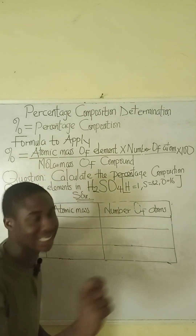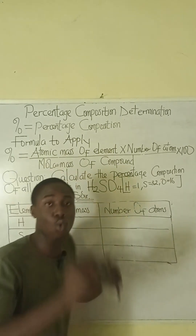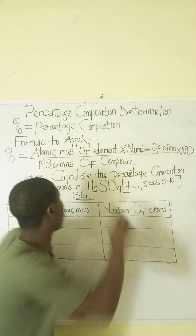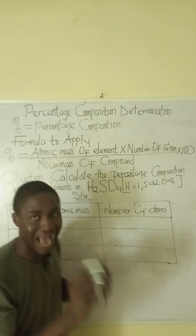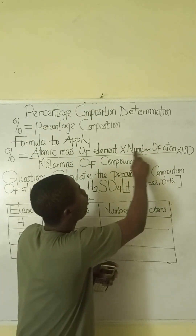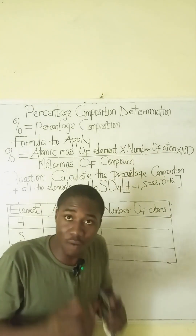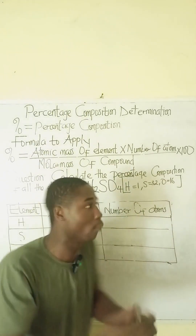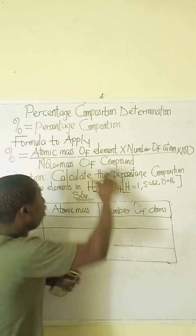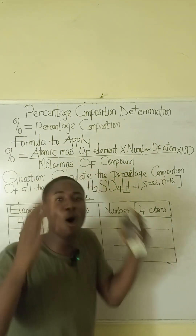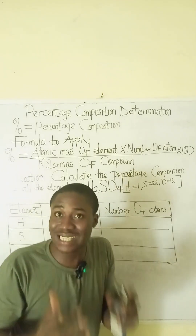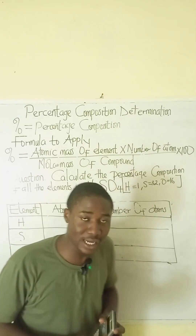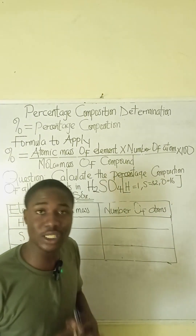The formula for percentage composition is: percent = (atomic mass of element × number of atoms of that particular element present in the compound) / molar mass of compound × 100. It is very easy.